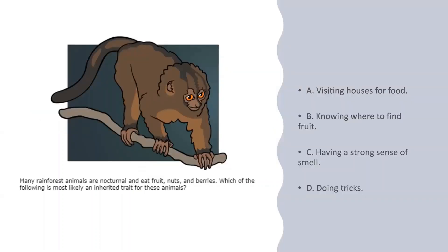Many rainforest animals are nocturnal and eat fruit, nuts, and berries. Which of the following is most likely an inherited trait for these animals? A, visiting houses for food; B, knowing where to find fruit; C, having a strong sense of smell; or D, doing tricks? I'll give you just a moment and we'll be right back.